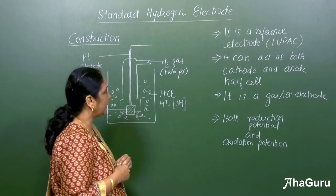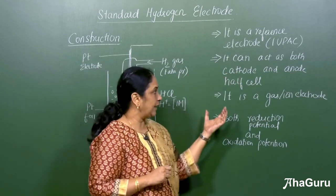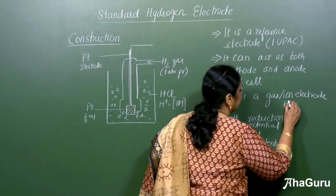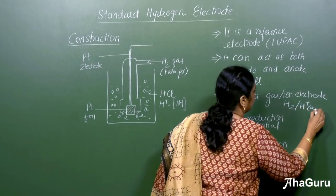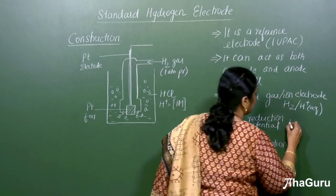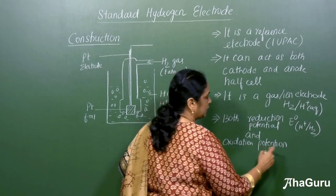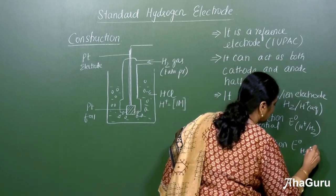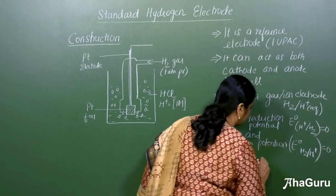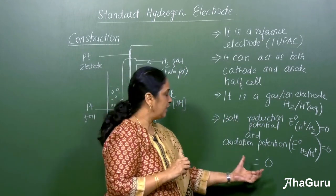Let us see some properties of the standard hydrogen electrode. It is considered as a reference electrode as per IUPAC. It can act both as a cathode and anode half cell, and it is a gas-ion electrode — H2 gas and H⁺. The main point here is that both the reduction potential (E° of H⁺/H2) and the oxidation potential (E° of H2/H⁺) are equal to zero.